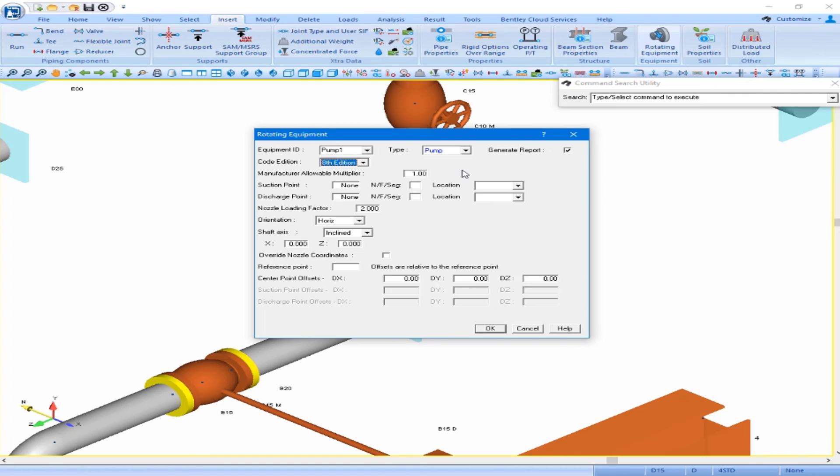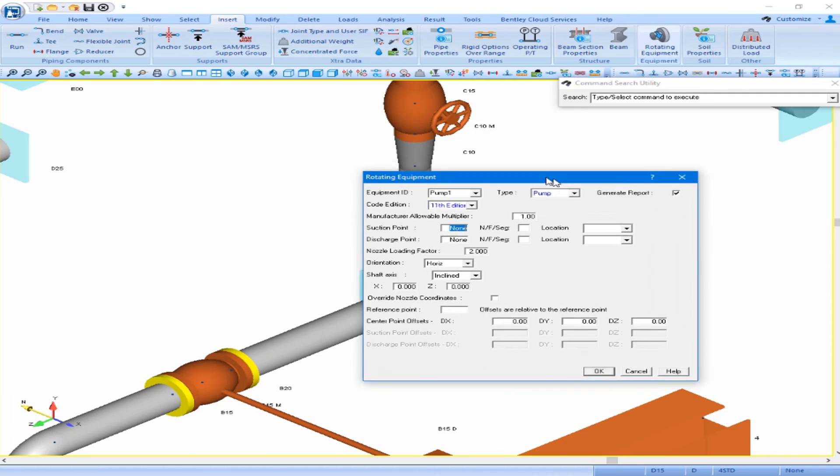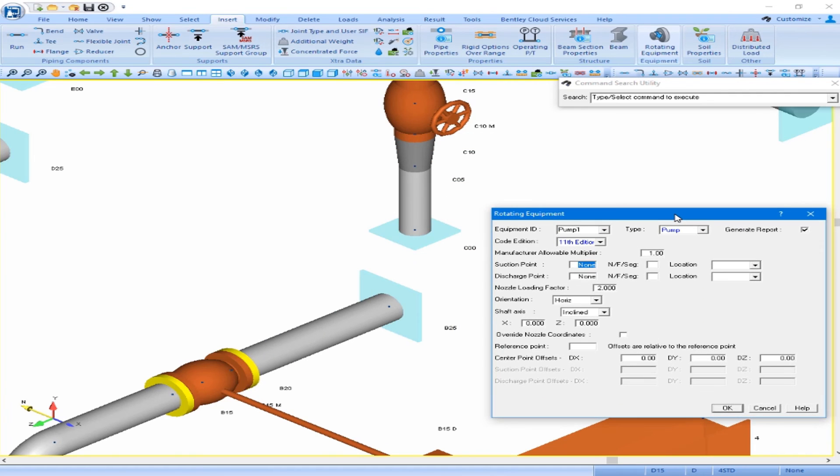We will use the 11th edition of the code, the latest available. And if you need to move the dialog box to make sure we see our suction and discharge points in the model. Our pump suction point is B25 and that will be located on the end of the pump.